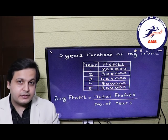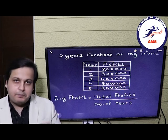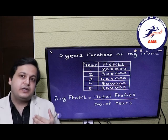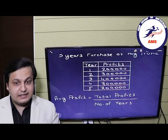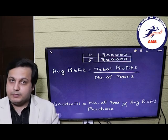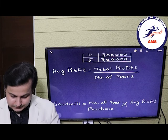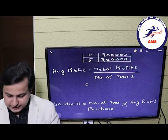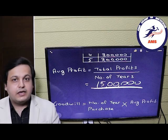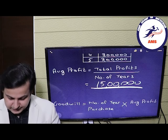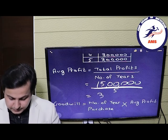Now we will take the number of years. Please do not add the numbers — that is 5 plus 4 plus 3 plus 2 plus 1. The number of years is just 5. As per our formula, the average profits will be total profits divided by number of years. So 15 lakhs divided by 5, the average profit comes out to rupees 3 lakhs.